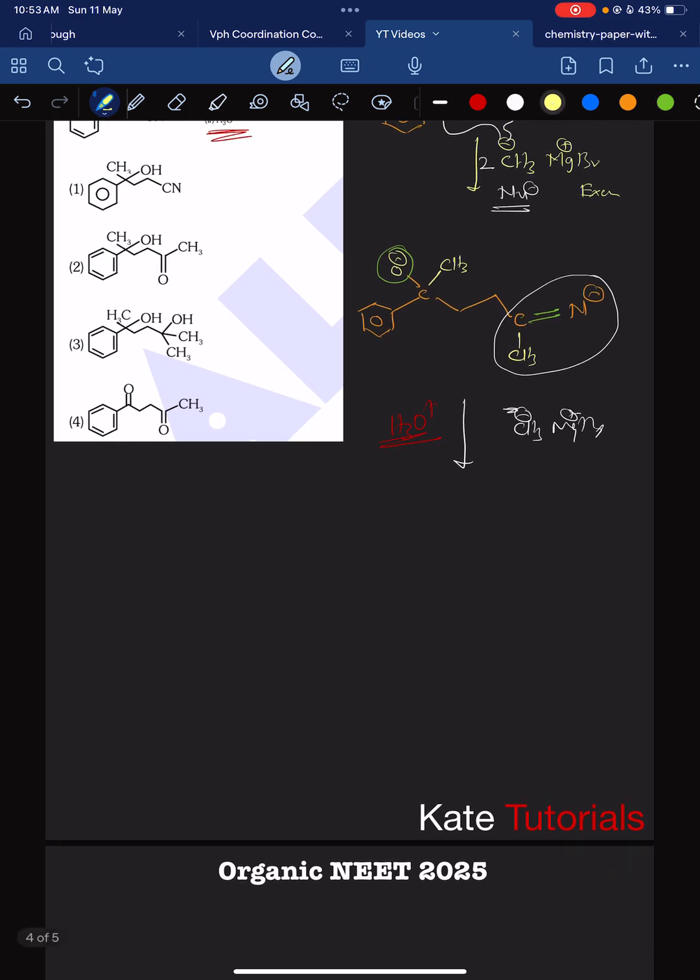So what do I get? Benzene ring remains as it is, and here carbon, here O minus becomes OH, and this will remain CH3. And here we have CH2, CH2, C, and here we get double bond O and it is CH3. And here ammonia was there, N, it will convert to ammonia and it will escape out when we do hydrolysis.